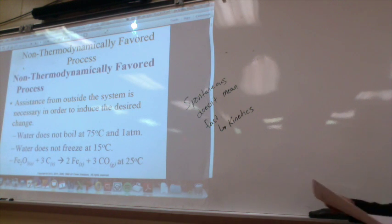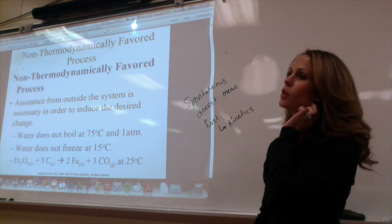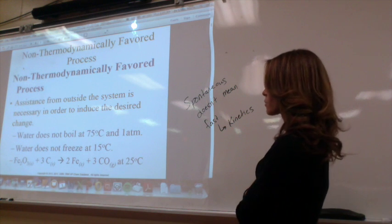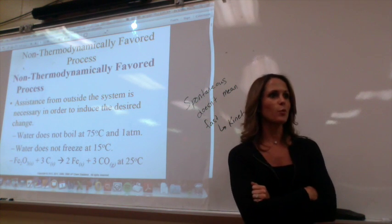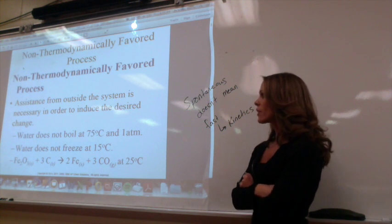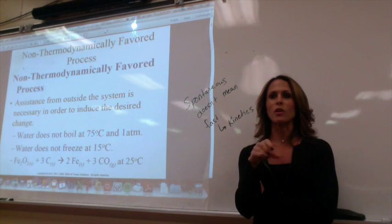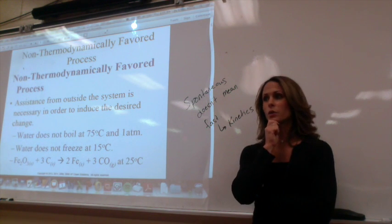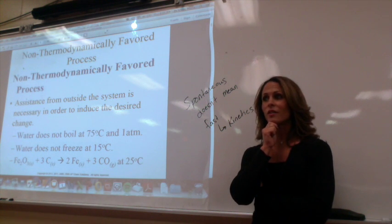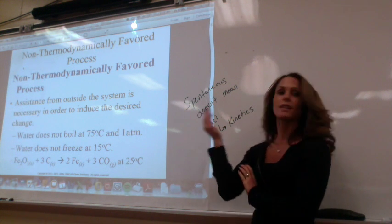Something that is not thermodynamically favored means it's going to require assistance from the outside in order to occur. For example, water does not boil at 75 degrees Celsius at one atmosphere — water boils at 100 degrees. The process of boiling is when vapor pressure equals atmospheric pressure. To get water to boil at 75 degrees, you could lower the atmospheric pressure — for instance, if you're high on a mountain.